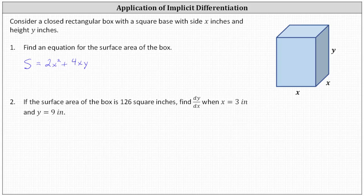Again, 2x squared is the area of the top and the bottom, and 4xy is the area of the four remaining faces, meaning the left side, right side, front and back sides.